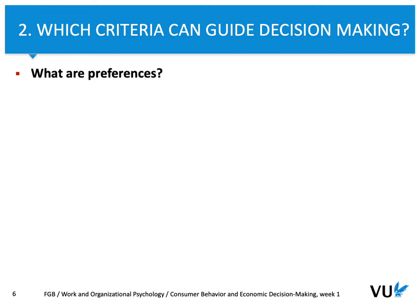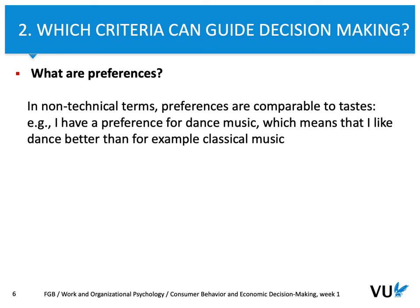As I mentioned, preferences are really important for understanding consumer behavior and the decision-making process. What are preferences? In non-technical terms, you can compare preferences to tastes. For example, you may say that you like dance music, rock music, or classical music. If you say that you like dance music, it probably means you like it more than classical music.